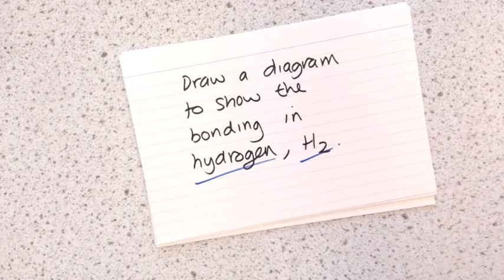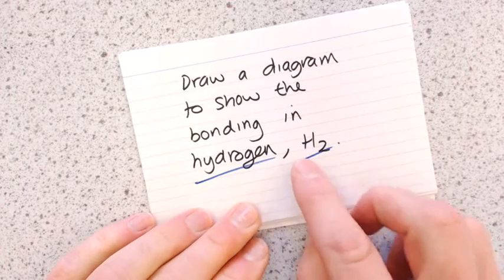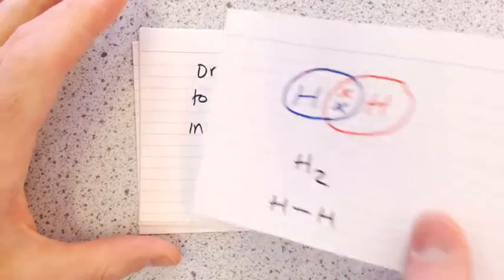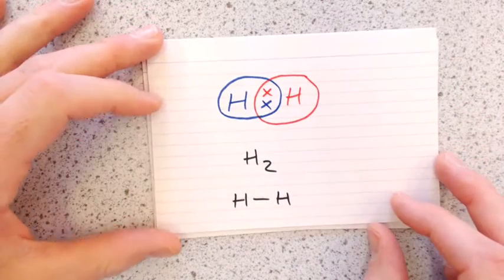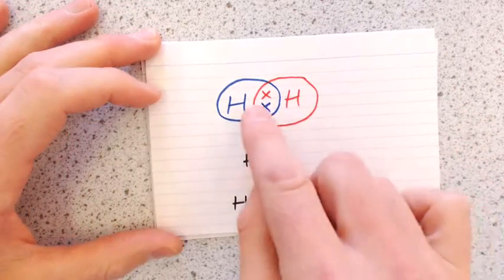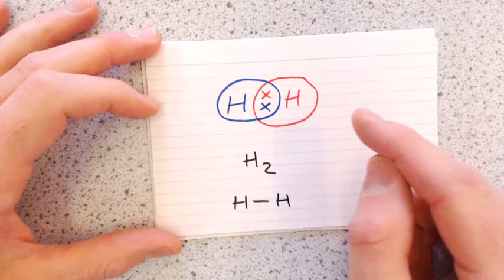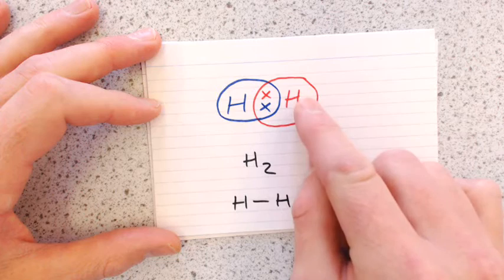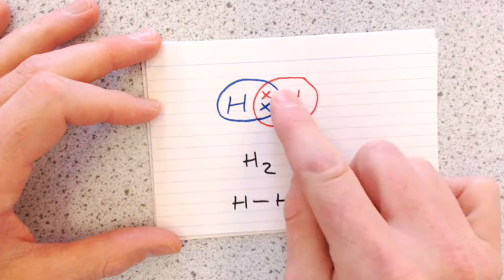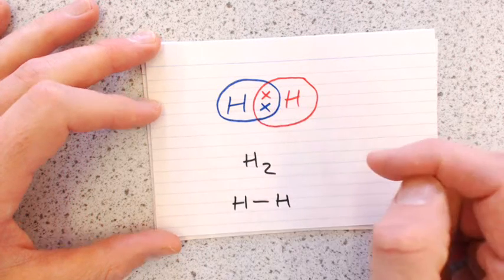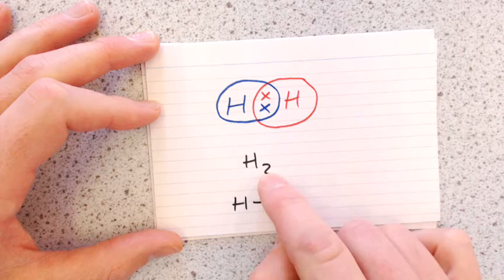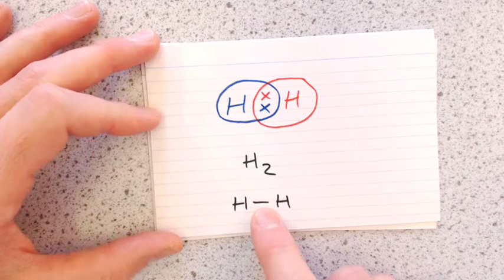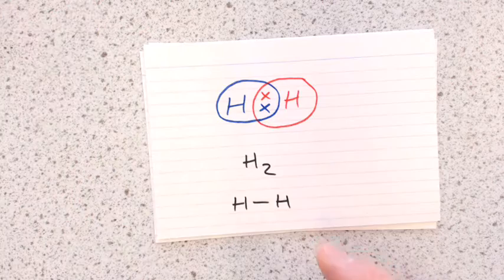Now draw a diagram to show the bonding in hydrogen. Hydrogen is made up of two non-metals, so it's covalent bonding. The shells overlap: one electron from each hydrogen meets in the middle — two electrons representing the covalent bond. You write this as H₂, or draw it as H–H, where the line represents the single covalent bond.